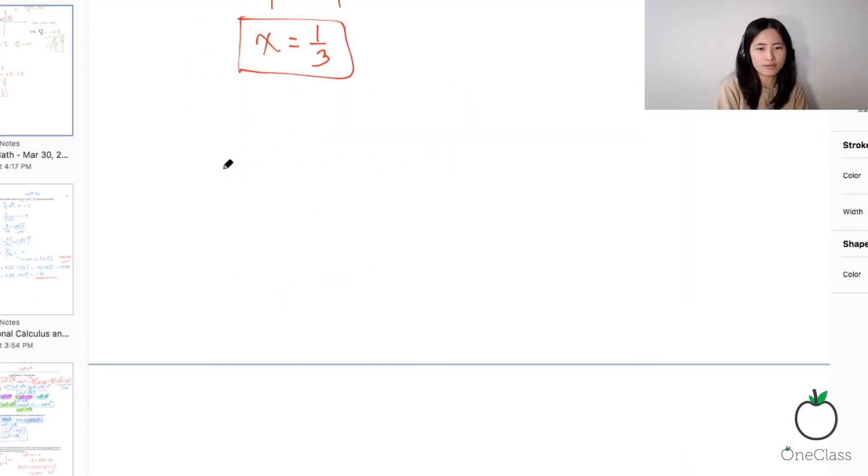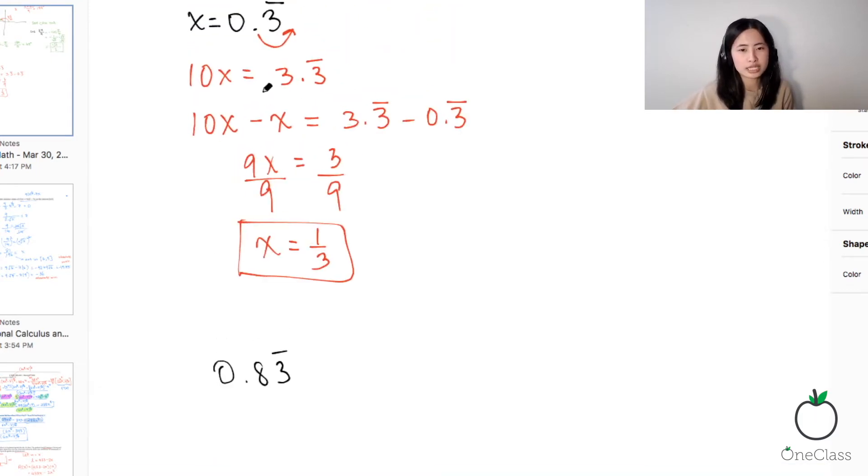So we have to have 0.83 and 3 is repeating, right? So now if you go back to this question, we said only one number was repeating. And it's just the 10th place value.